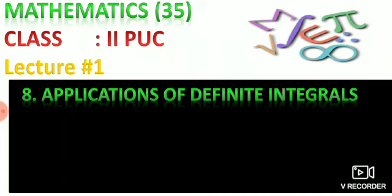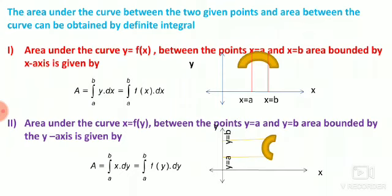In the examination, you can expect two questions from applications of definite integrals — one question in part C and one in part D, that is one three-mark question and one five-mark question. We are only expecting up to eight marks from this chapter, and these two questions are not compulsory in both sections. The area under the curve between two given points and area between the curve can be obtained by definite integrals.